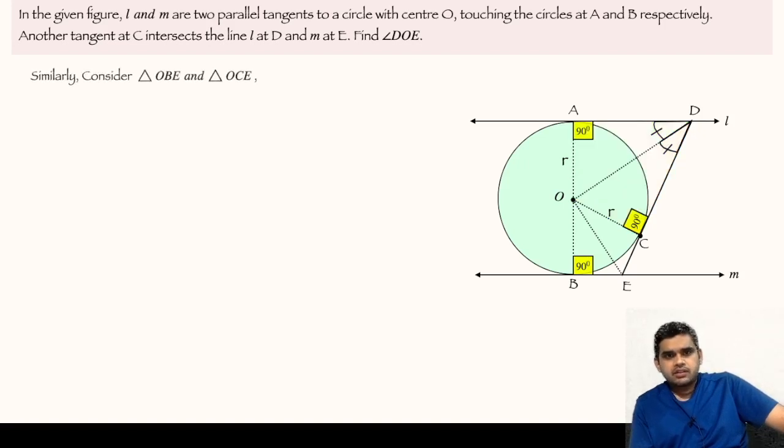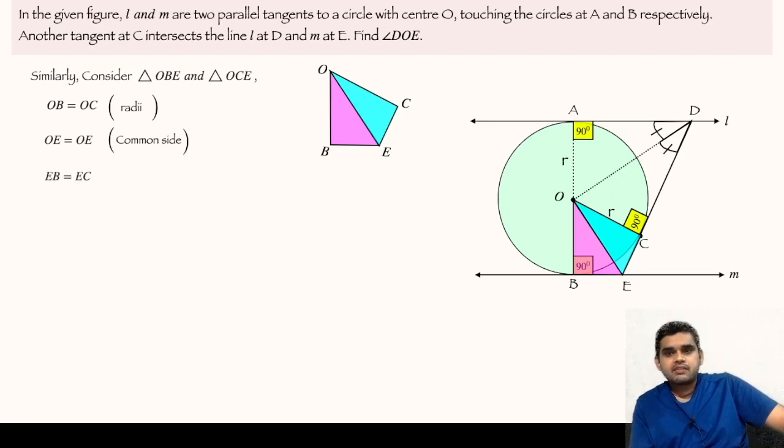Similarly, consider triangle OBE and triangle OCE. Here also, we see that OB is equal to OC, the reason being they are the radii of the circle. Also, OE is common in both the triangles and likewise EB will be equal to EC. Why? Because E is any external point to the circle from where two tangents are drawn, so they must be equal in measure. This is a theorem.